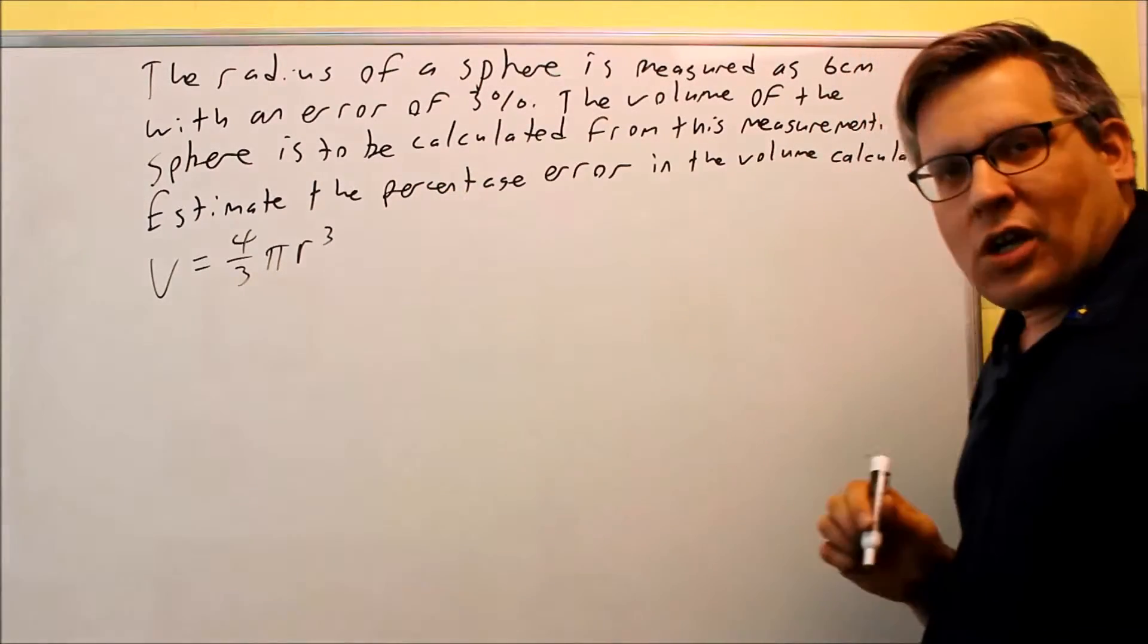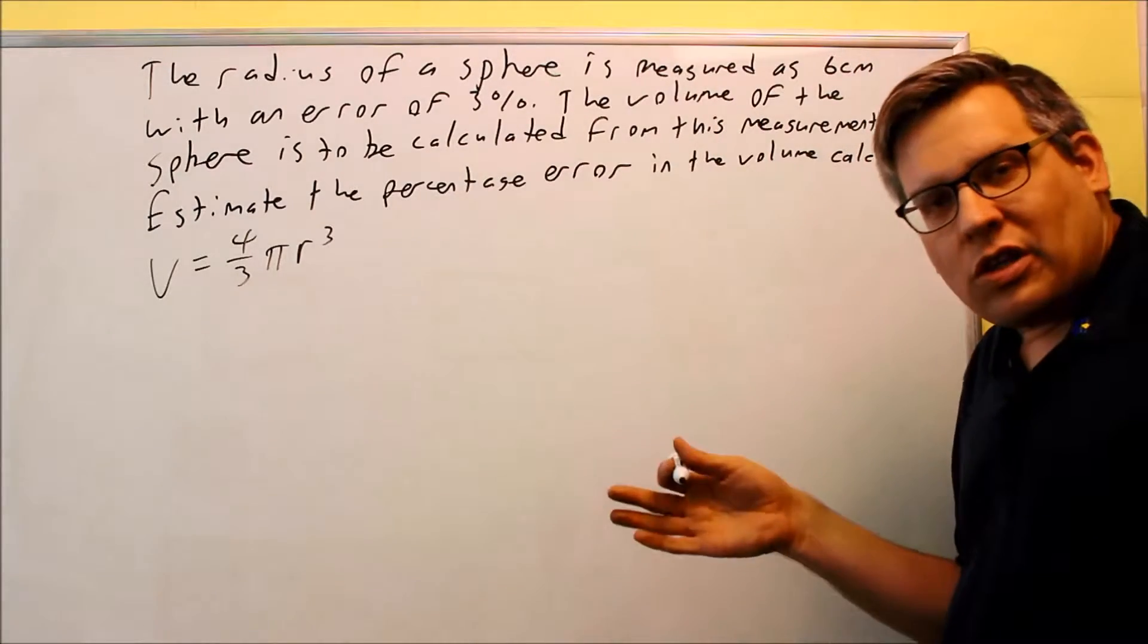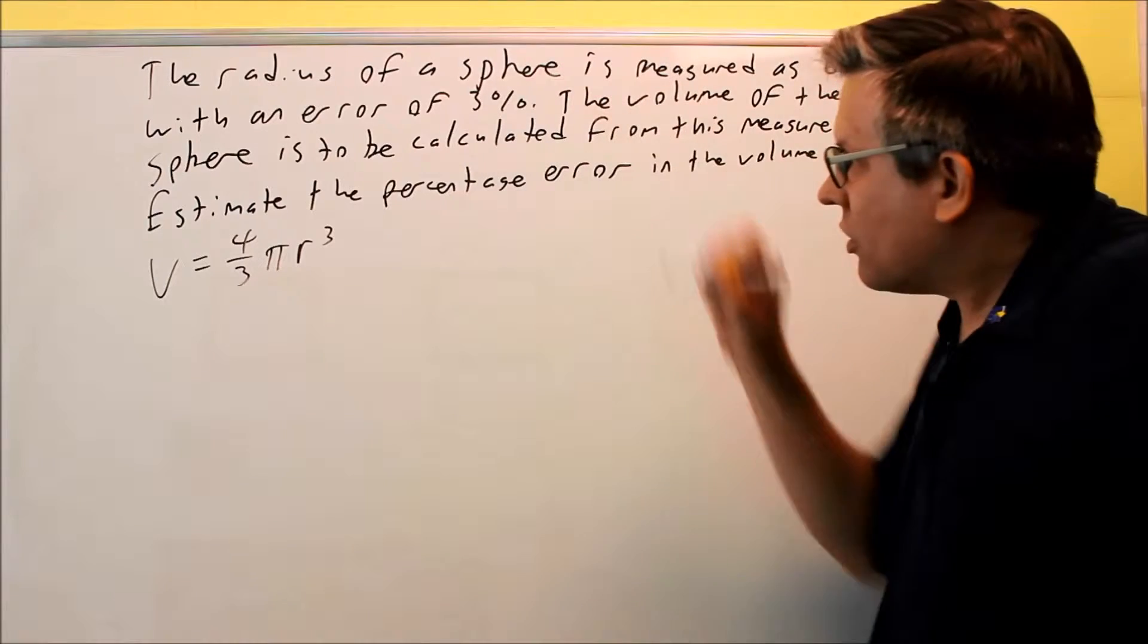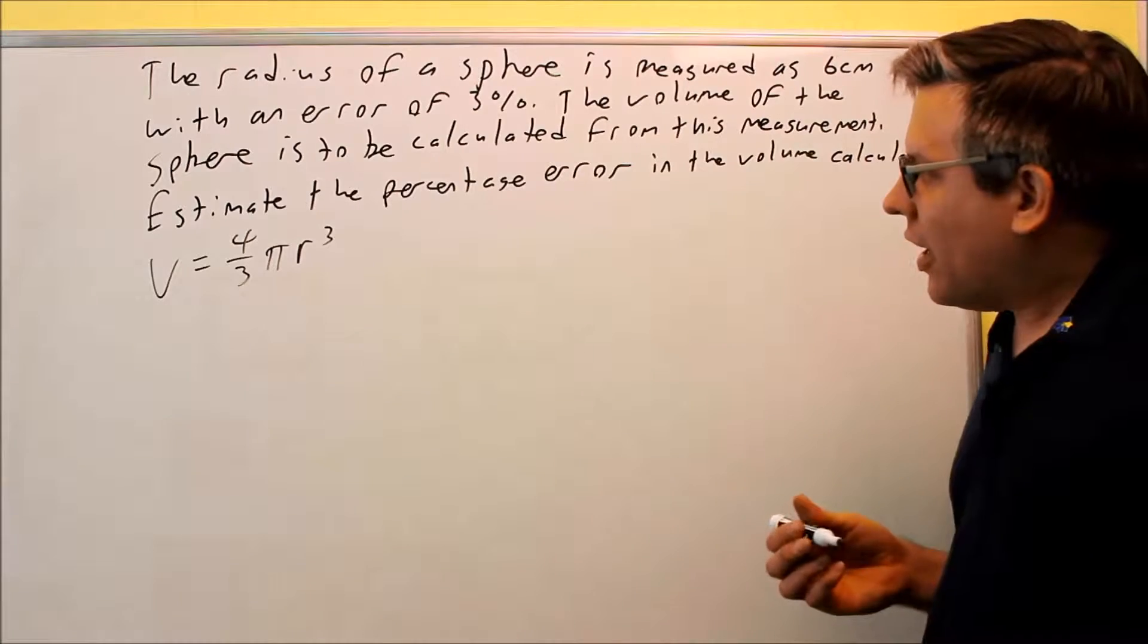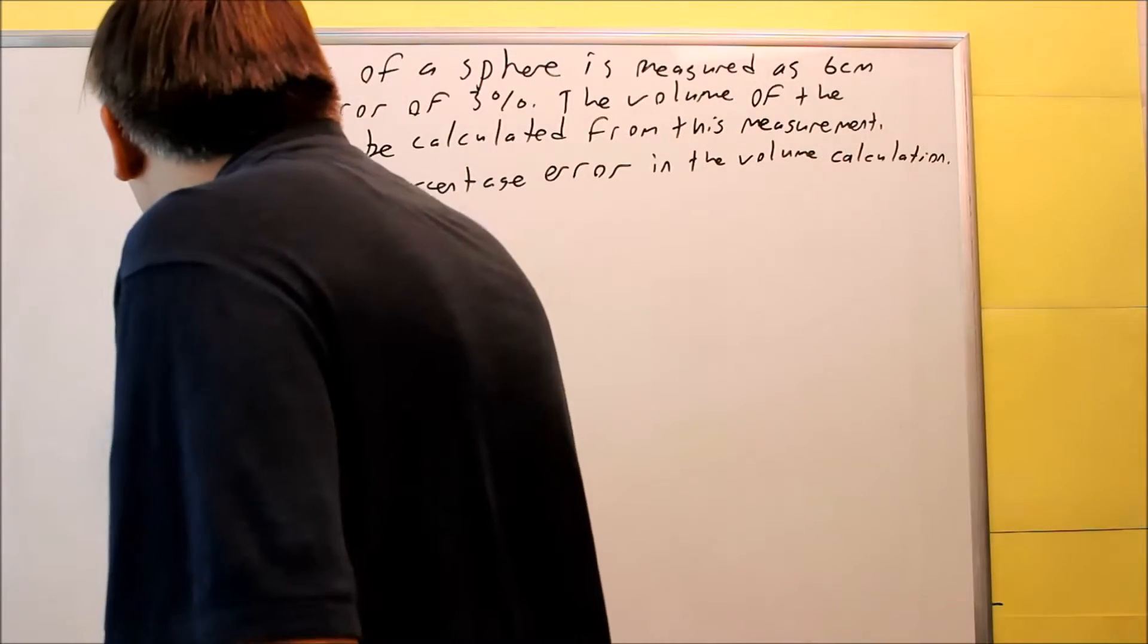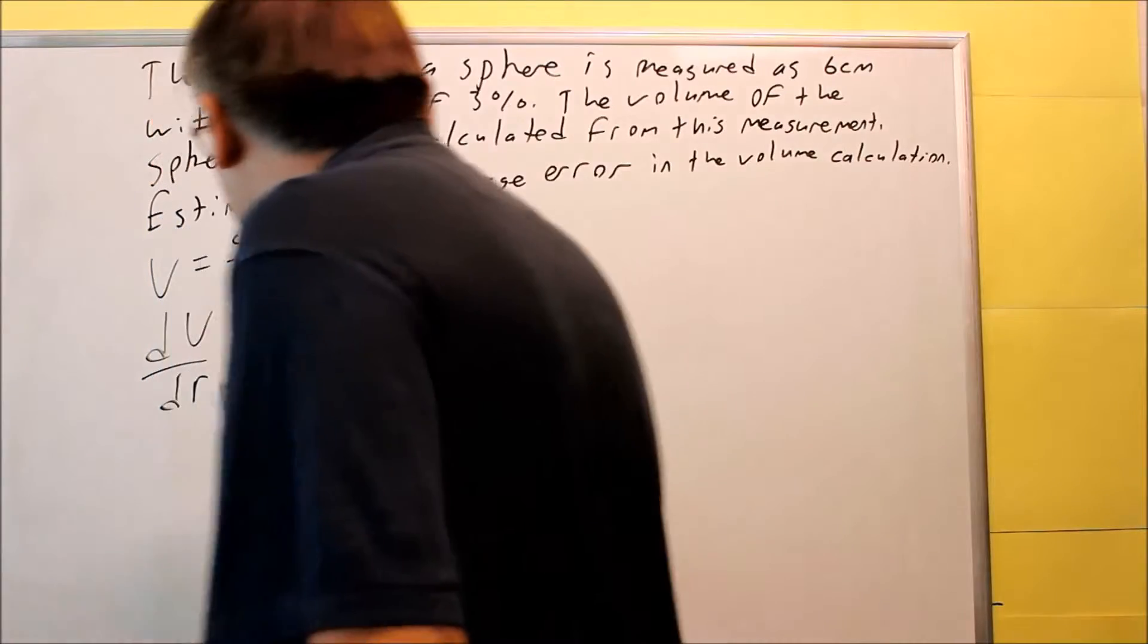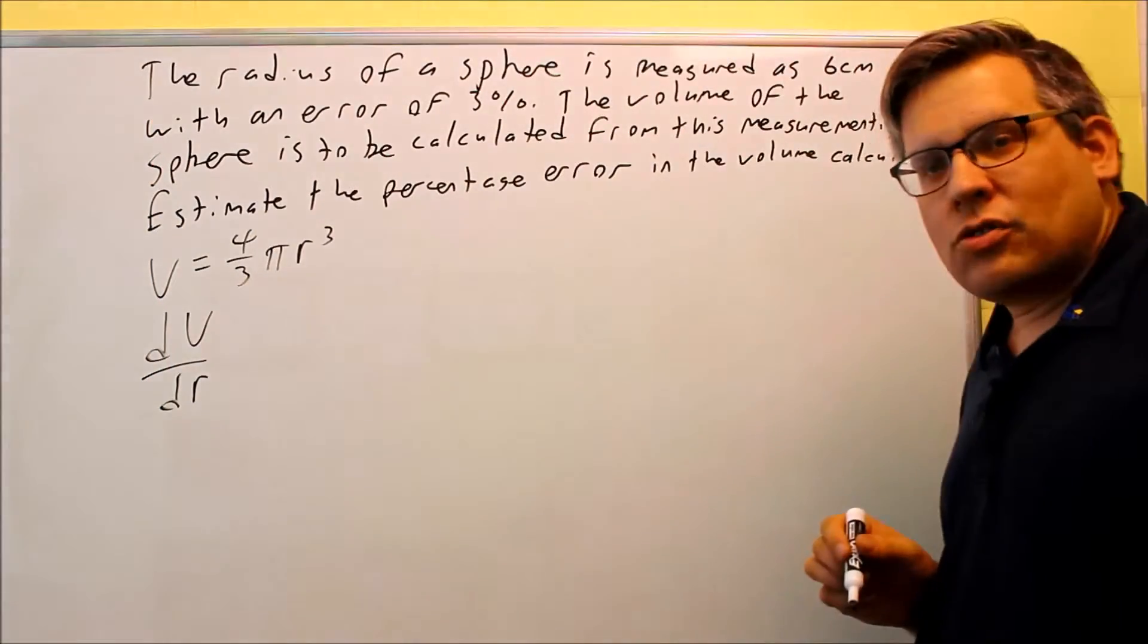We want to take the derivative because dV, that's going to be my change in volume, what the difference is when I'm using the 3%. Essentially, it's the volume calculated with that error. When I do the derivative, dV/dr, the volume with respect to the radius,